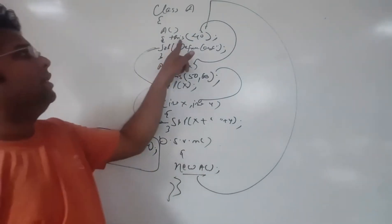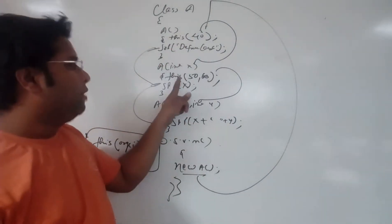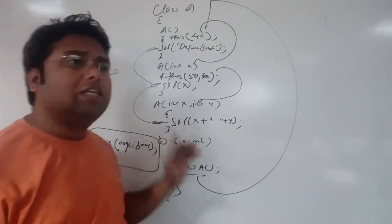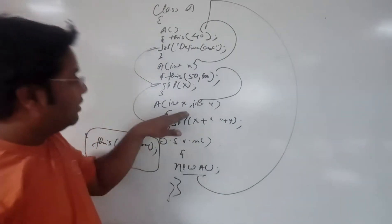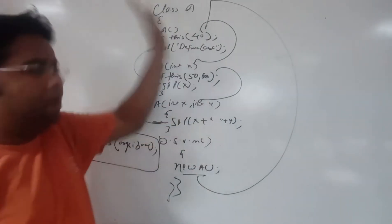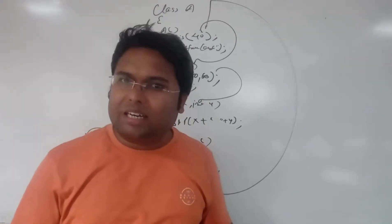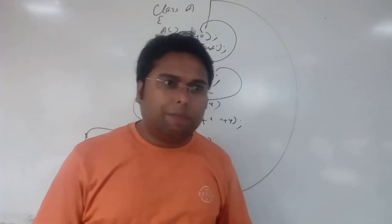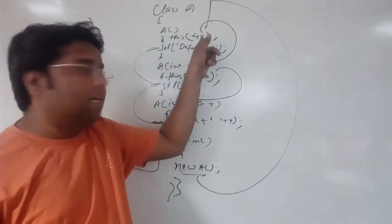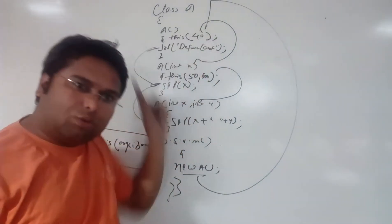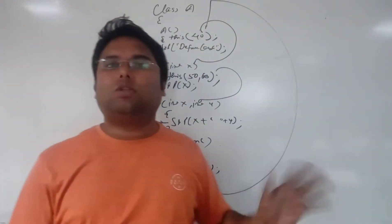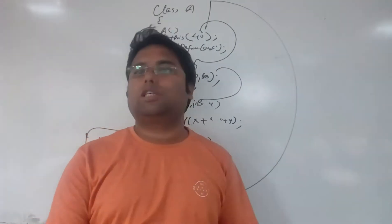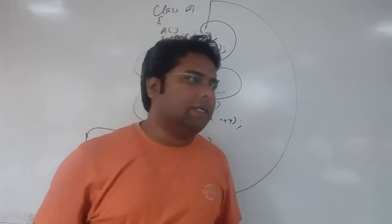The call using `this` must be the first statement in the constructor body. There must be at least one constructor where `this` is not used. If you put `this` again in that constructor, it will start calling itself recursively — and that gives a compile-time error: 'recursive constructor invocation not allowed.'